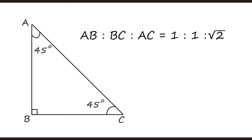In a 45-45-90 triangle, since both base angles are 45°, the two legs are equal, giving a ratio of 1 : 1. The hypotenuse opposite 90° is √2, so the full ratio of the three sides is 1 : 1 : √2.